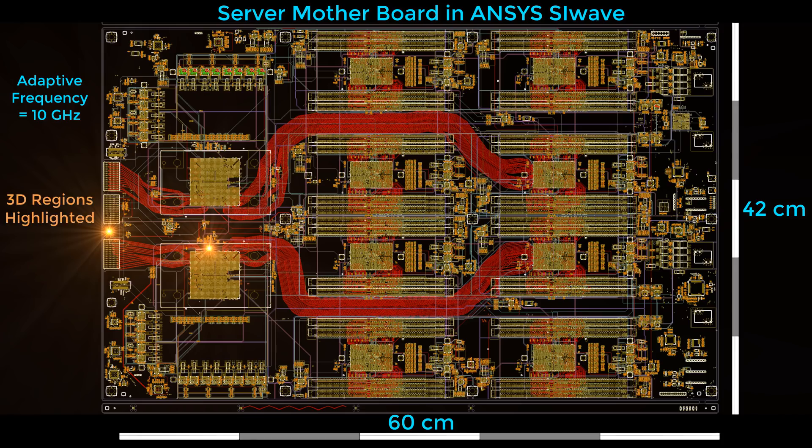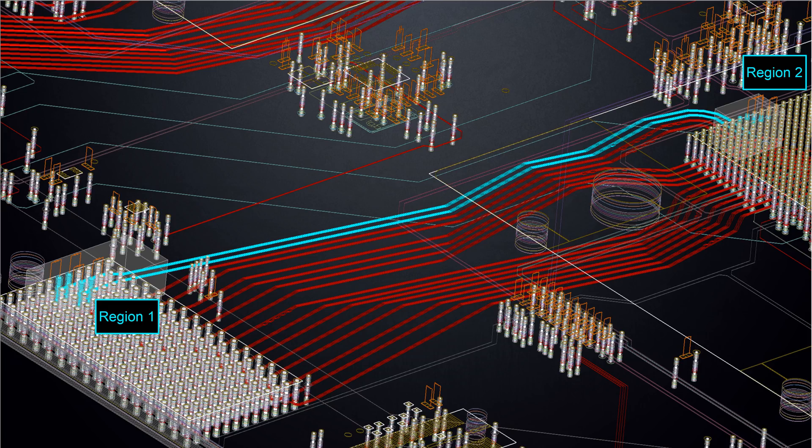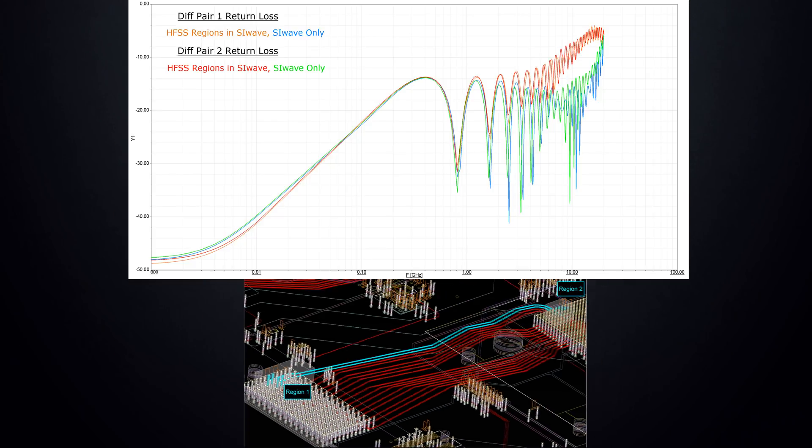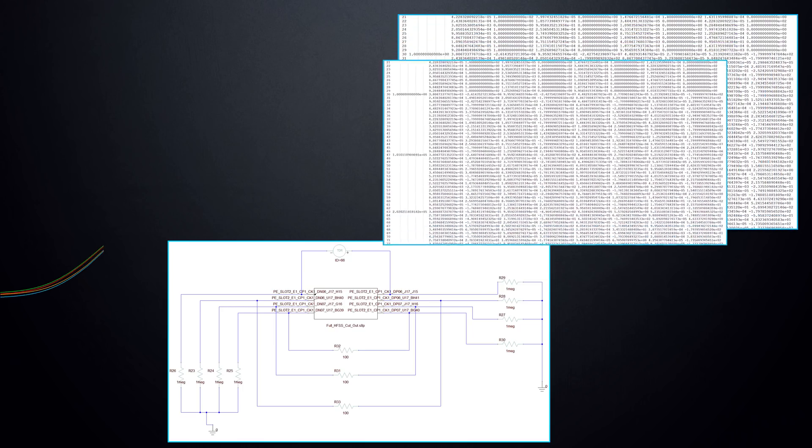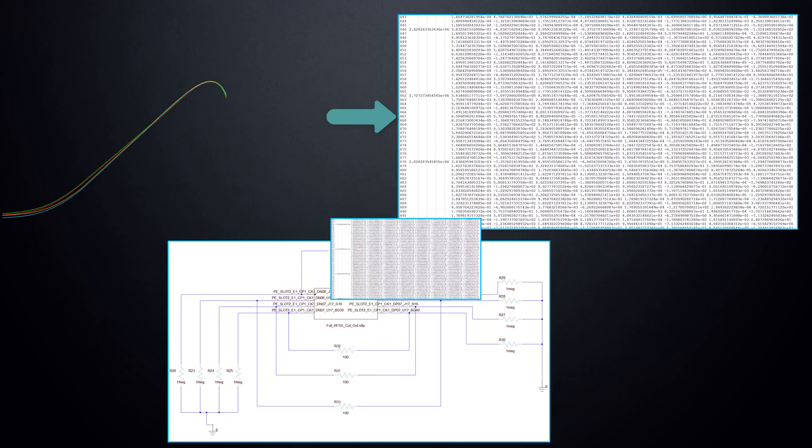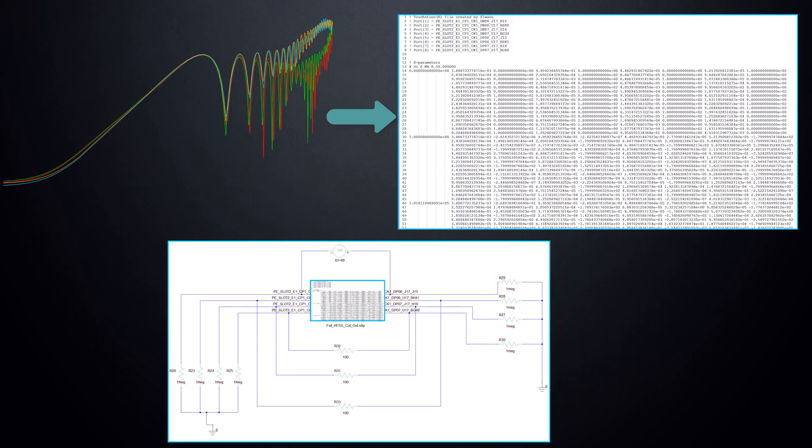This large motherboard was solved in ANSYS SI-Wave. Results from HFSS Regions in SI-Wave predict higher return loss for the PCIe 3 channel above 5 GHz. State space models generated from the S-parameter results can be used in time domain circuit simulations to evaluate channel impedance.